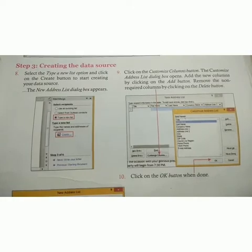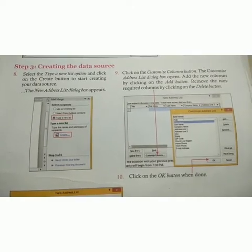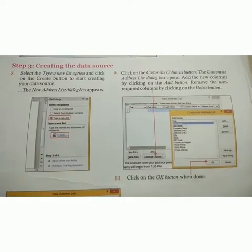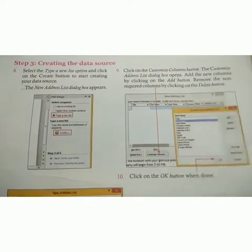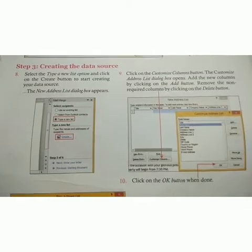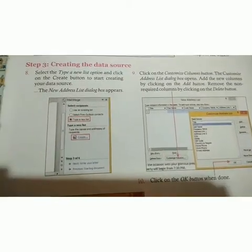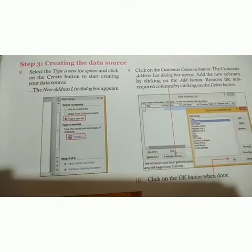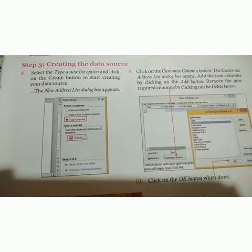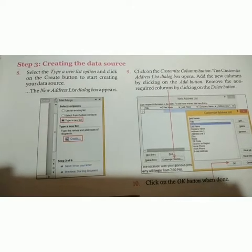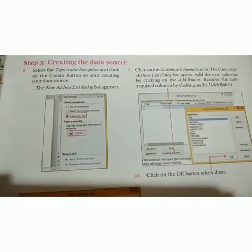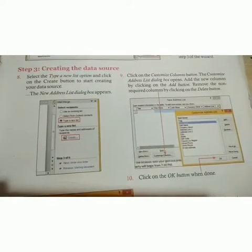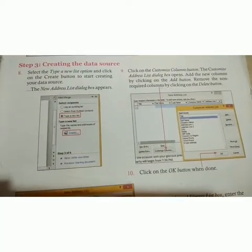Step 9: click on the Customize Columns button. The Customize Address List dialog box opens. Add new columns by clicking the Add button. Remove non-required columns by clicking the Delete button. Then click the OK button when done. So students, these are the steps related to Mail Merge.